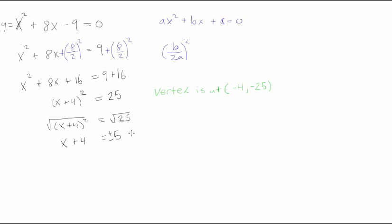So now we'll rearrange for x. And x is equal to negative 4 plus or minus 5. And that will give us the answers. x is equal to negative 4 minus 5 is negative 9, and x is equal to negative 4 plus 5 is 1. So these are the two x-intercepts of our parabola.